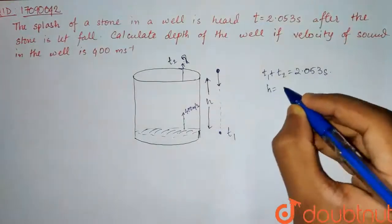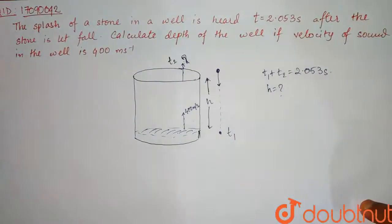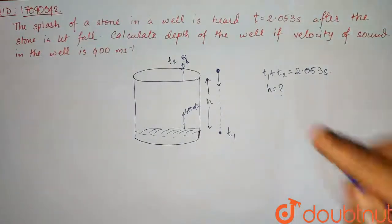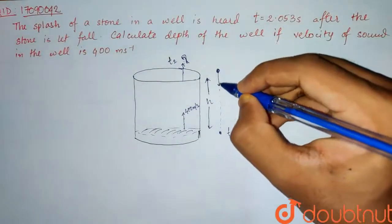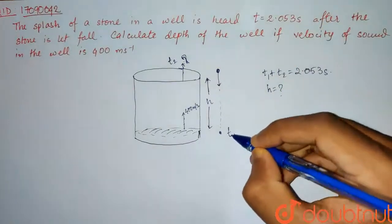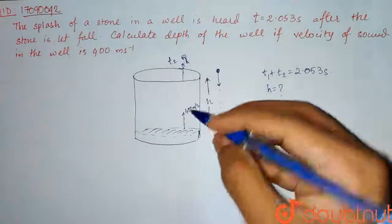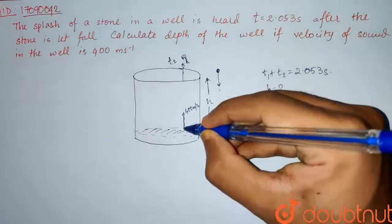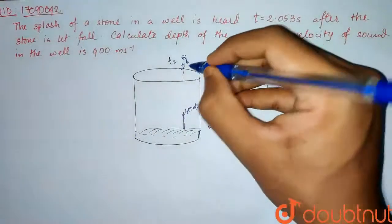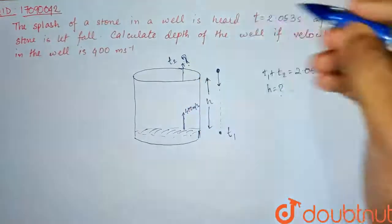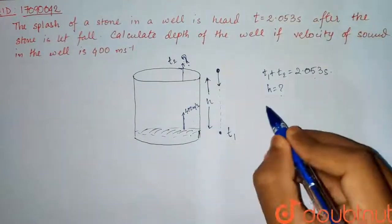So this is the question. The stone is in freefall, reaching the water surface in t1 seconds. After hitting the water surface there is a splash sound creation which is reaching t2 seconds after to your ears. We have given t1 plus t2 value and we have to find H.